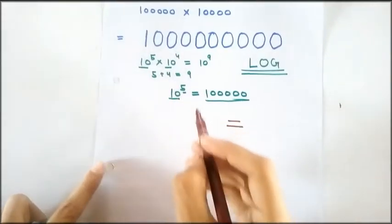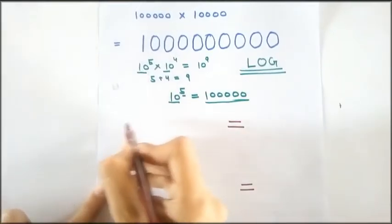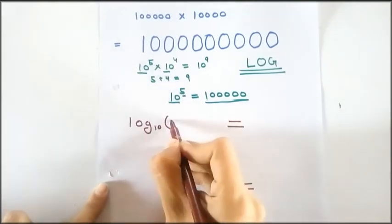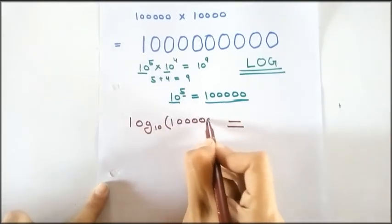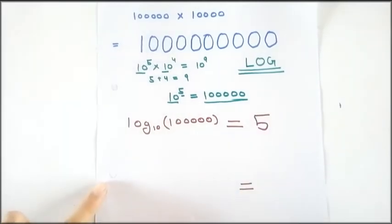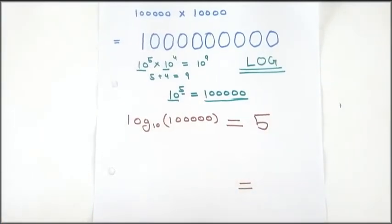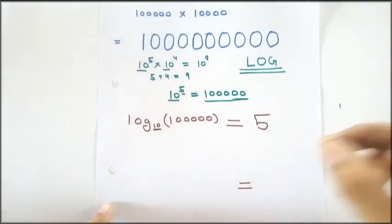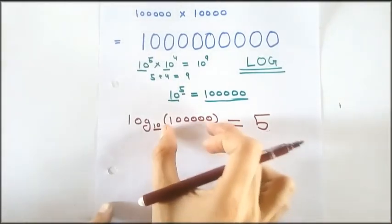Now I will write this in log. That is log base 10, 1 followed by 5 zeros, is equal to 5. This is telling us that 10 will have 5 as the power to get this number.